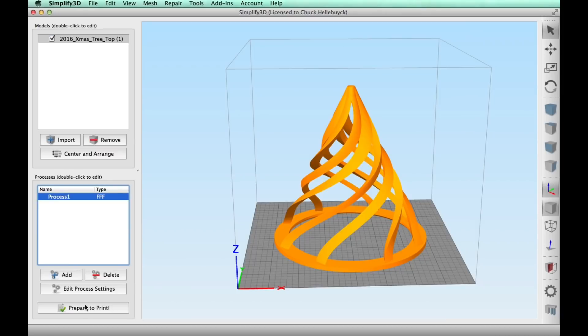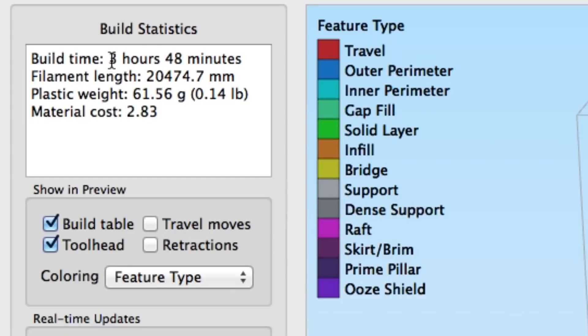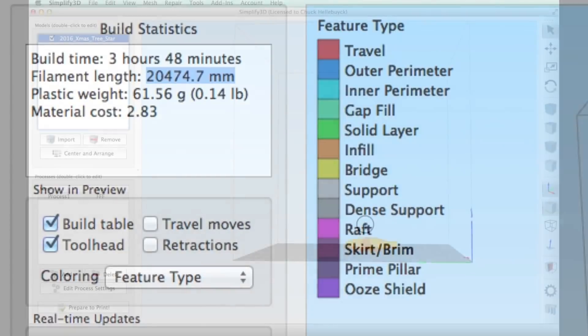Then I printed at 60 millimeters per second. I clicked on prepare to print and it looked good. It said it would take 3 hours and 48 minutes and just over 20 meters of plastic. So it was ready to send to the printer.